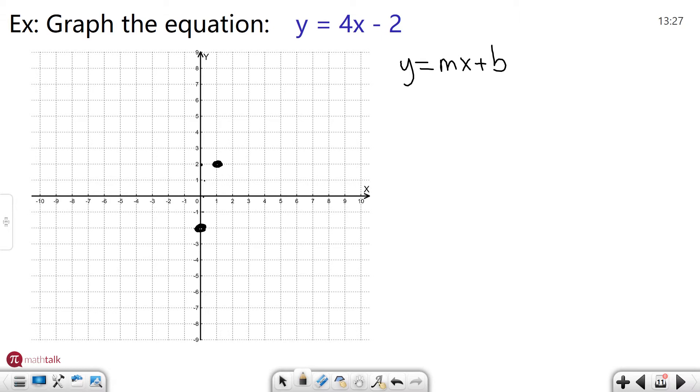So I'm going to follow the same slope up 1, 2, 3, 4 over 1 and I'm going to draw my line straight through like that. And there you have the equation of y equals mx or y equals 4x minus 2. There's your line. Let's look at one more example.